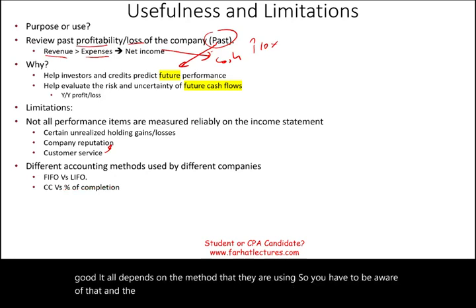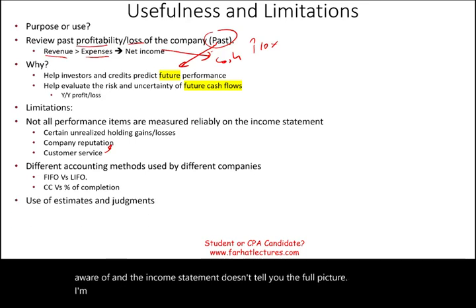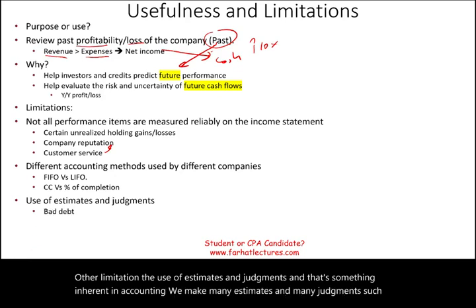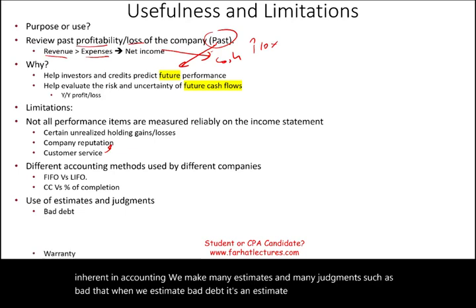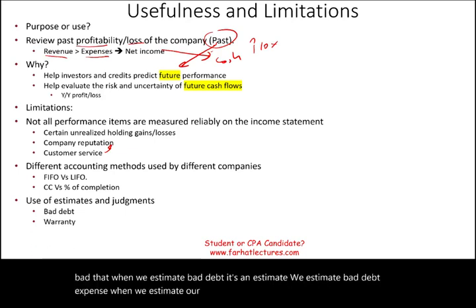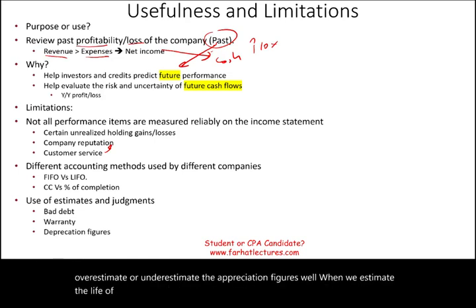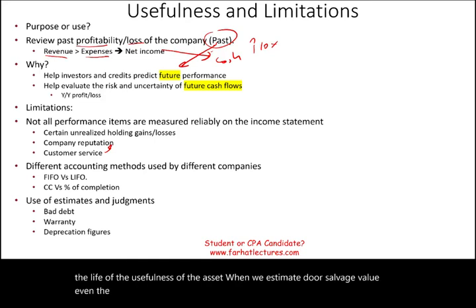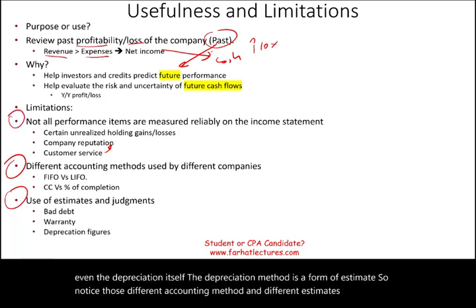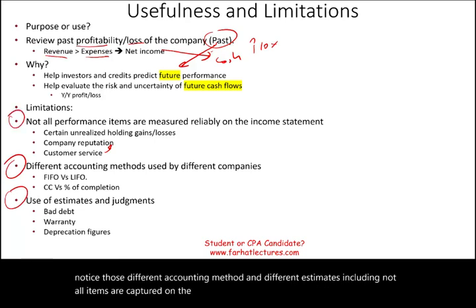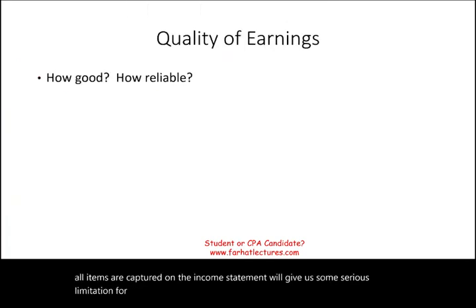Another limitation is the use of estimates and judgment, which is inherent in accounting. We make many estimates, such as bad debt expense — that's an estimate, meaning we can overestimate or underestimate. When we estimate warranty costs, again the word 'estimate' applies. Depreciation figures also involve estimates: the useful life of an asset, salvage value, and even the depreciation method itself is a form of estimate. These different accounting methods and different estimates, including items not captured on the income statement, create serious limitations for the quality of earnings.